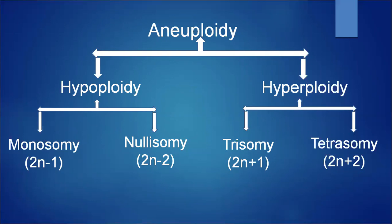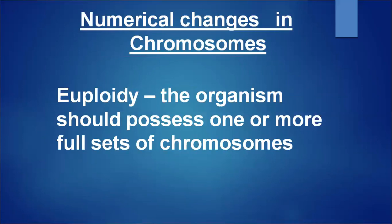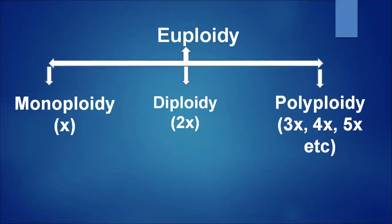Next is euploidy. The organism possesses one or more full sets of chromosomes. Euploidy is divided into three types: monoploidy (x), diploidy (2x), and polyploidy (3x, 4x, 5x, etc.).